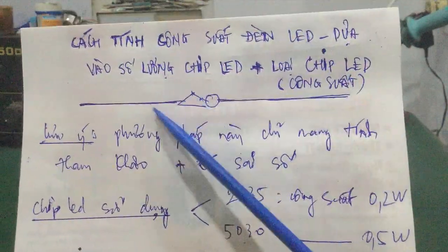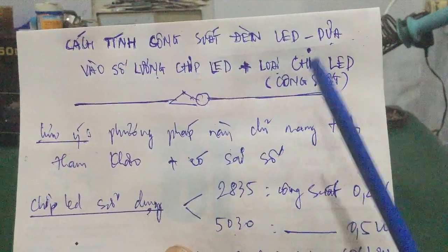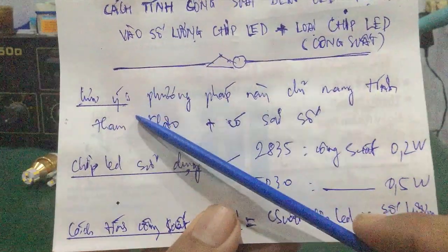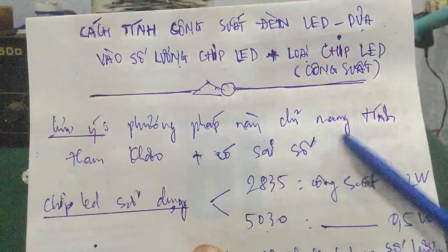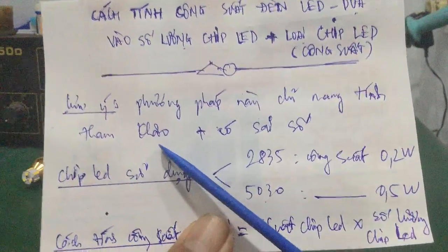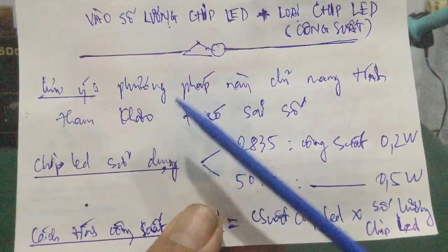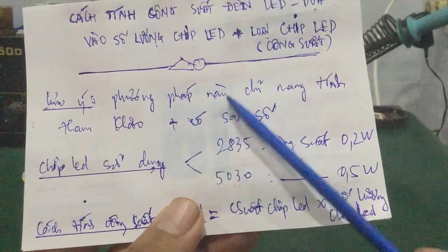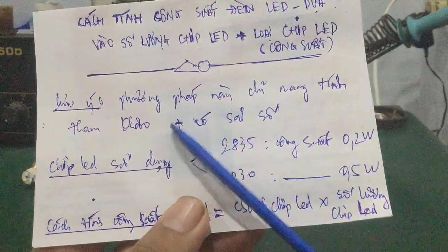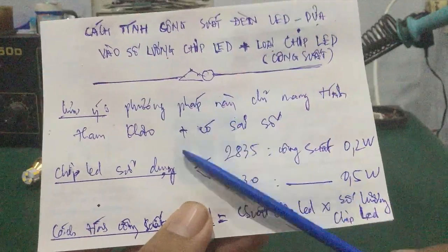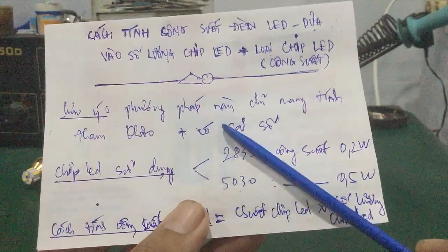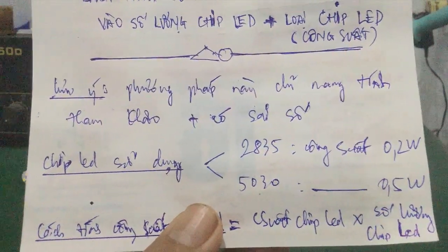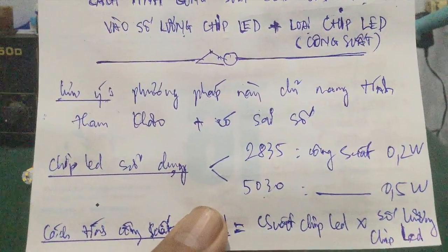Mình sẽ tính công suất cái đèn LED nha, dựa vào cái số lượng chip LED và công suất của từng loại chip LED. Mình sẽ lưu ý một vấn đề ở đây là cái phương pháp này chỉ mang tính chất tham khảo thôi nha. Và ngoài ra cái cách tính này có một vài sai số so với thực tế, bất kỳ cái nào mình tính toán lý thuyết thì thực tế sẽ có sai số một chút xíu nha.